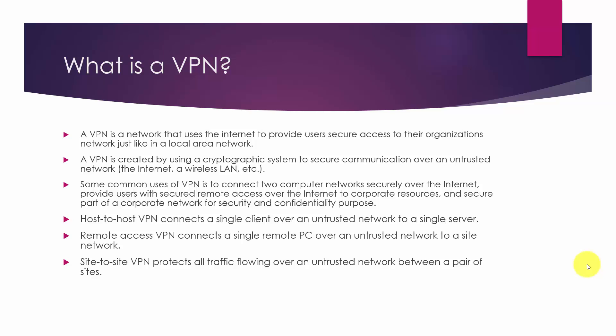The three types of VPN are host-to-host, remote access, and site-to-site. Host-to-host VPN connects a single client over an untrusted network like the internet to a single server. Remote access VPN connects a single remote PC over an untrusted network to a site network. And lastly, site-to-site VPN protects all traffic flowing over an untrusted network between a pair of sites.